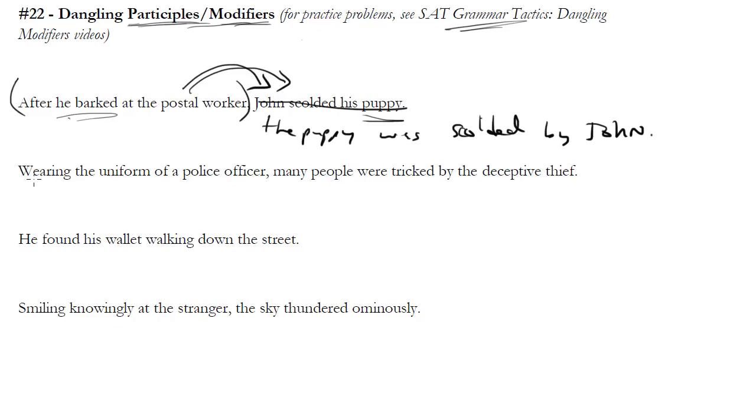Let's look at a better example with actually a participle. So wearing the uniform of a police officer, many people were tricked by the deceptive thief. So we've got our participial phrase here, wearing the uniform of a police officer, and this is going to modify the thing that comes right after it. But as written, it sounds like many people were wearing the uniform of a police officer. That's not what we want. We want the deceptive thief to be wearing the uniform.